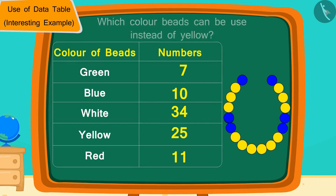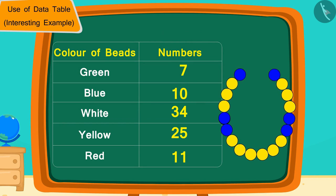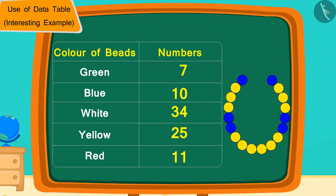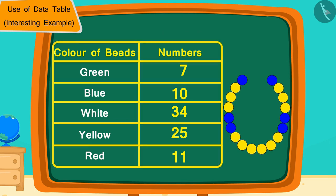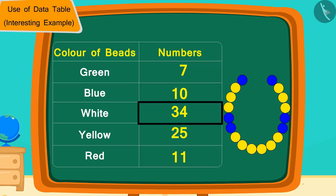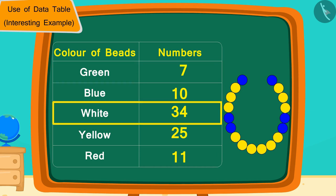That's correct. According to the design made by Golu, Chanda needs 12 yellow beads. We can see in the table that only 34 is more than 12, which is the number of white colored beads. Therefore to make the necklace, Chanda can also use white colored beads instead of yellow colored beads.